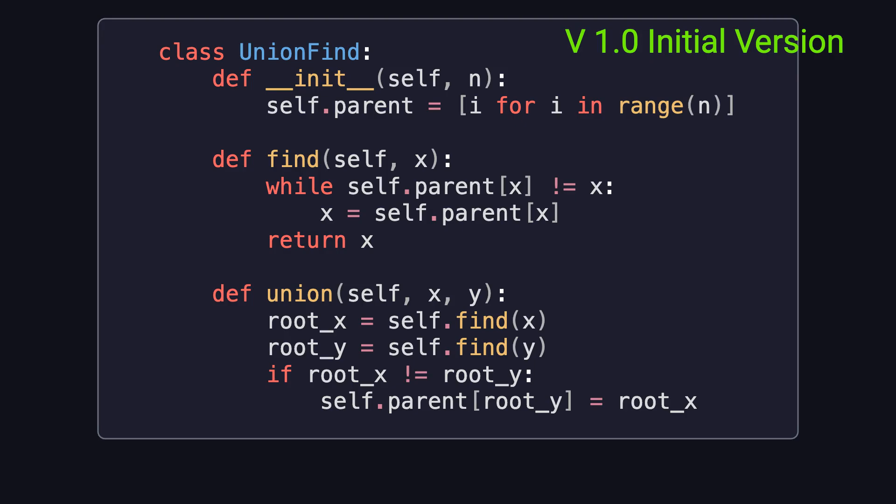Here's a basic implementation of Union-Find in Python, which I'll call version 1.0. First, the init method takes a parameter n, which represents the number of elements. We create an array called parent of size n. At the beginning, each element is its own parent, meaning parent[i] equals i. This matches the make set operation we just talked about.